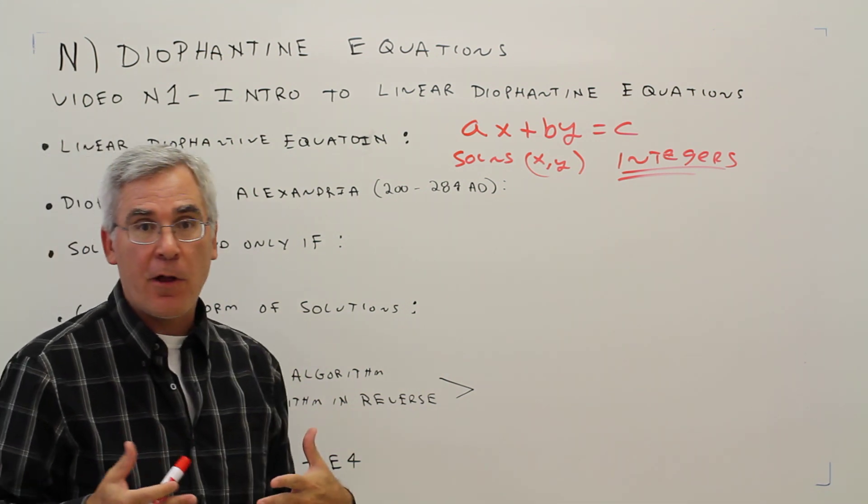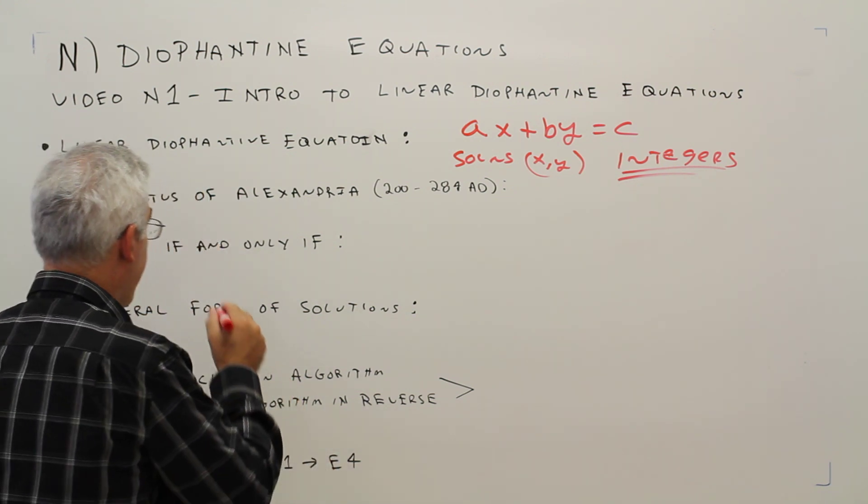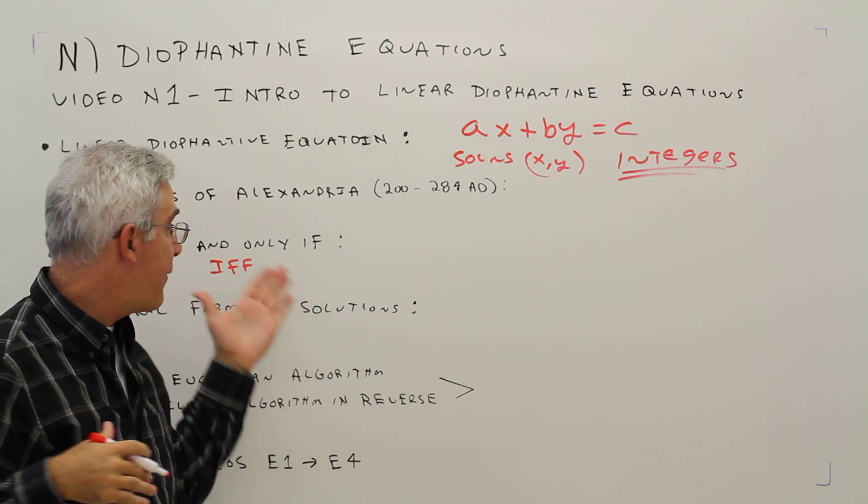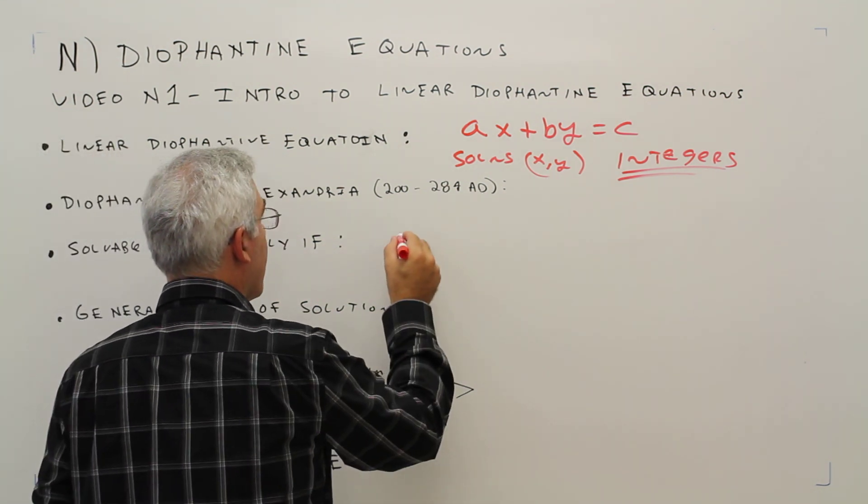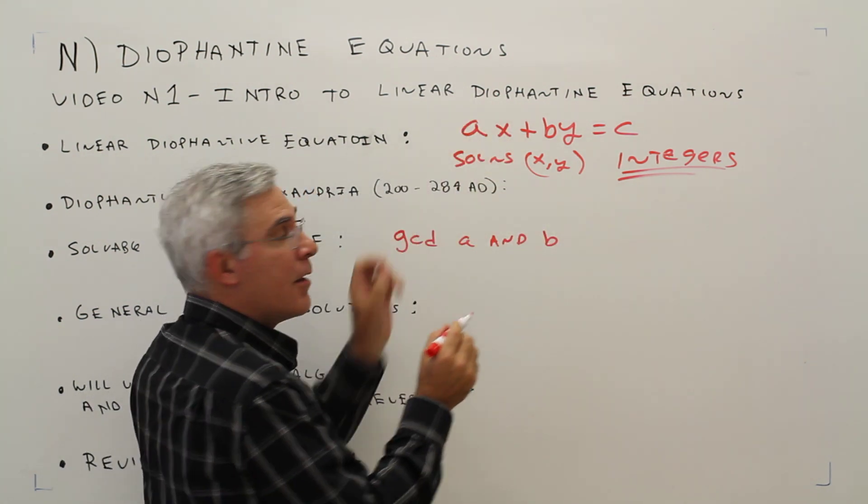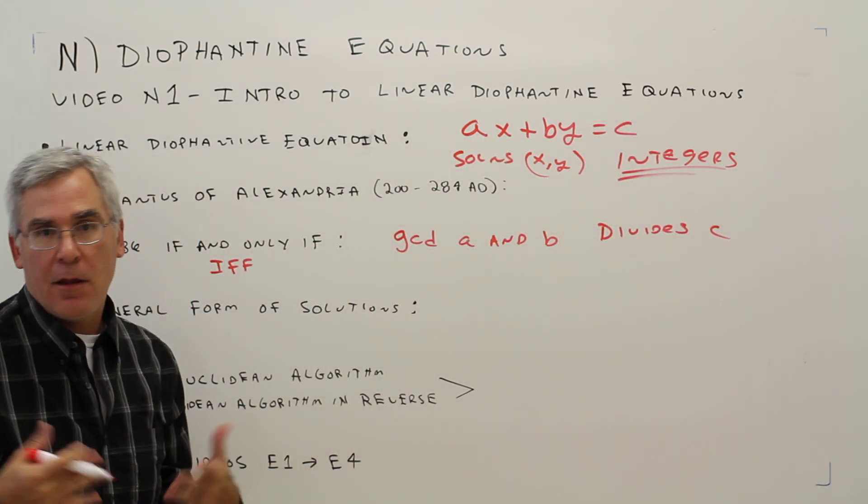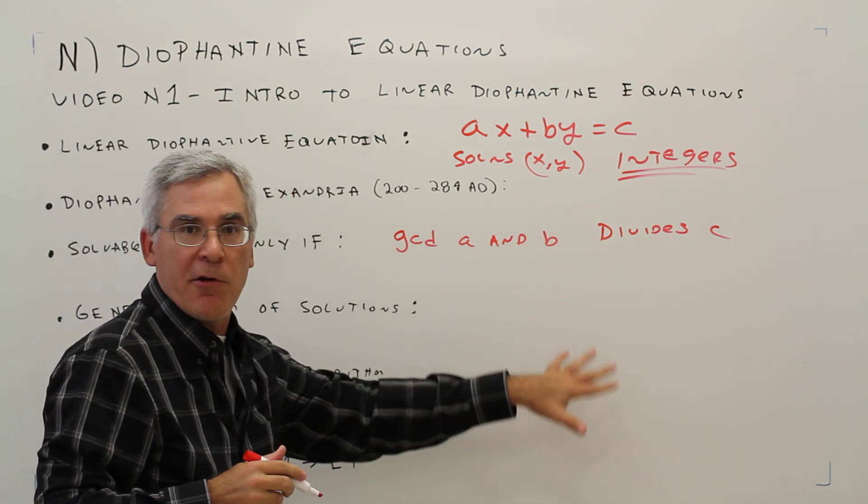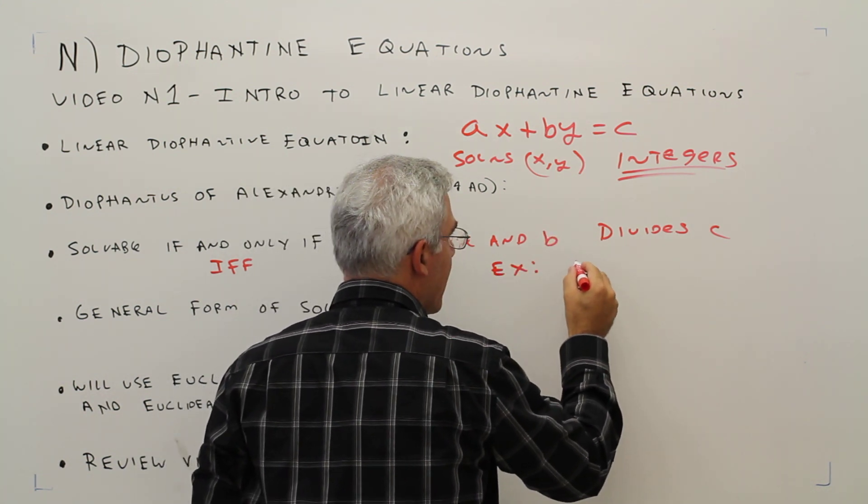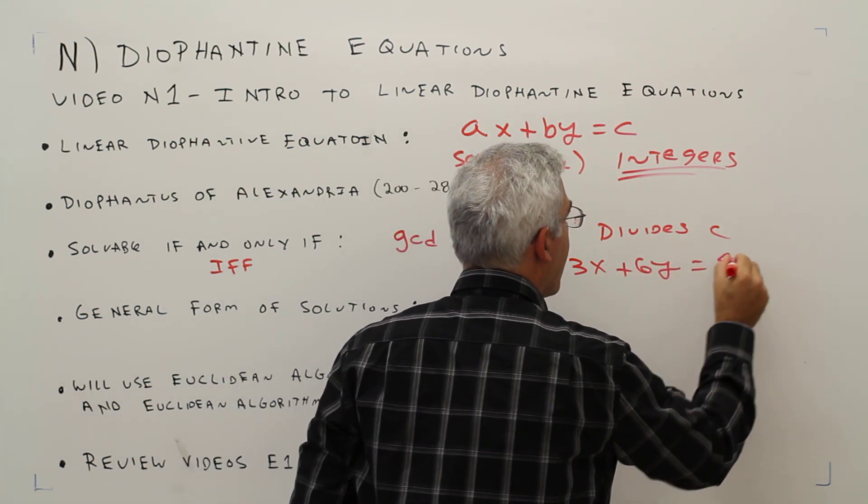First of all, these Diophantine linear equations are solvable if and only if, you'll find in later math classes IFF stands for that, if and only if the greatest common divisor of A and B divides C. And I'll give you an example. For example, let's say we've got the equation 3X plus 6Y equals 4.